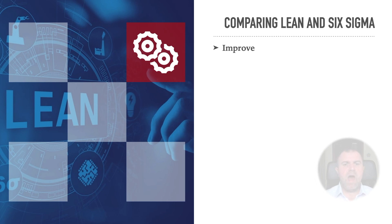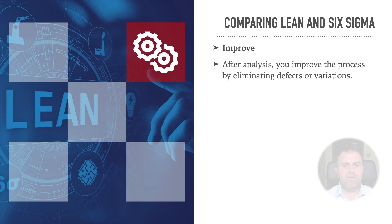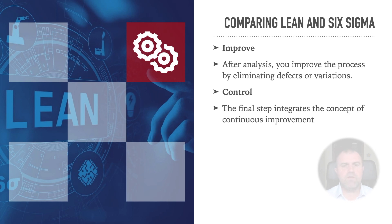Improve. After analysis, you improve the process by eliminating defects or variations. Control. The final step integrates the concept of continuous improvement. In this step, you control the improved process by monitoring future process performance.